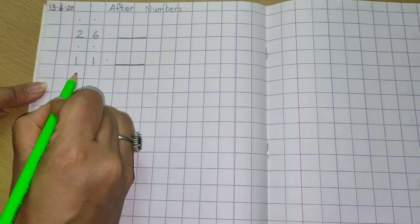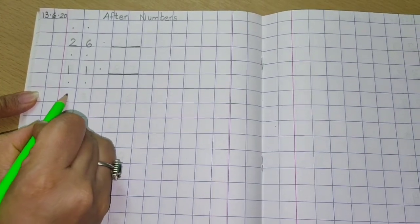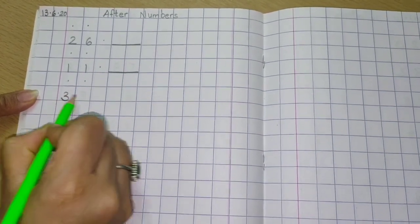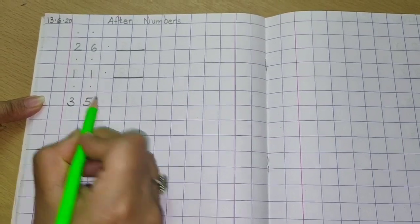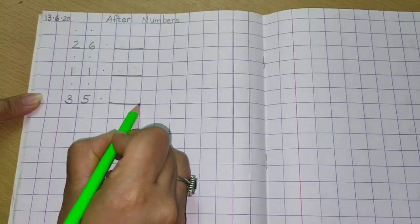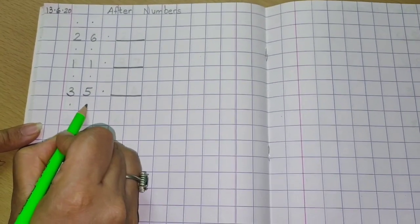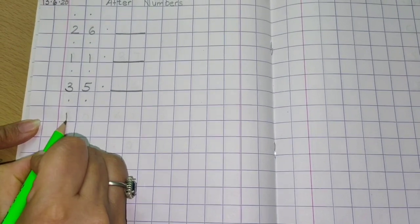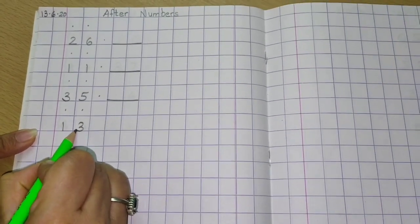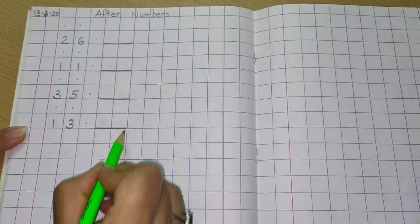After 11, underneath that you make two dots and then you will write next number 35. One dot and dash on two boxes. Underneath the 35 you make two dots and then you write 13. Dot in one box and dash in two boxes.